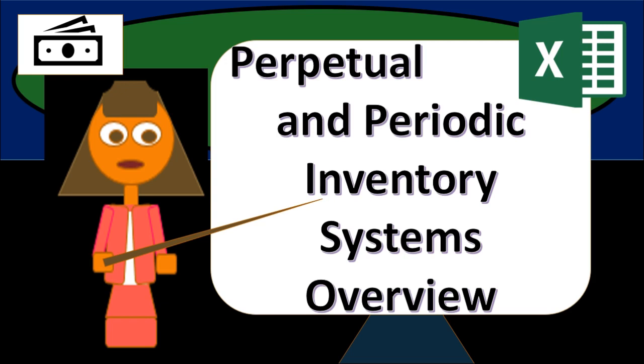These two systems have to do with when we record the cost of goods sold and the decrease in inventory.